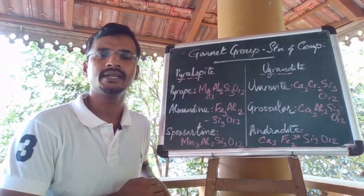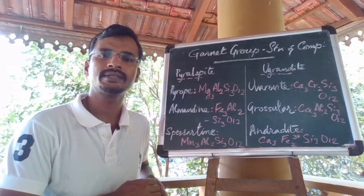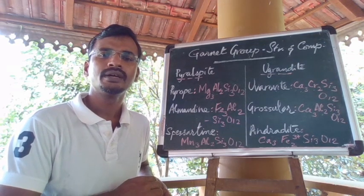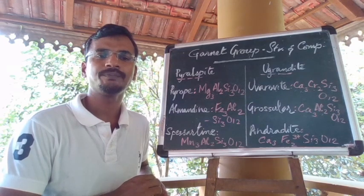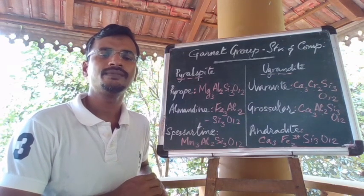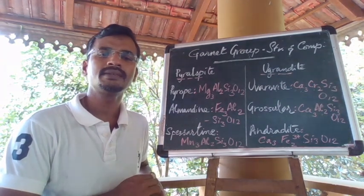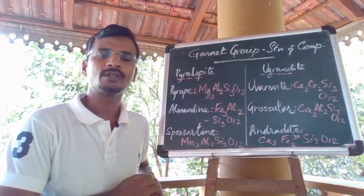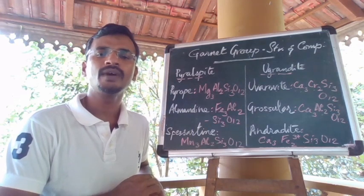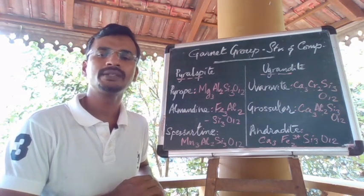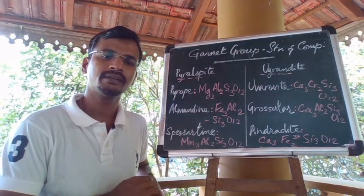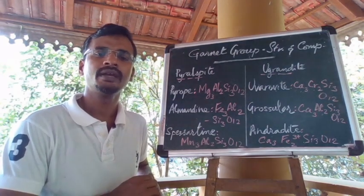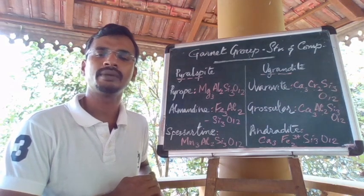Melanite is a titanium variety of andradite (Ca3Fe2Si3O12) where the octahedral position is occupied by iron. When Fe3+ is greater than Ti in the octahedral site the garnet is called melanite. If Fe3+ is less than Ti in its octahedral site, such garnets are called schorlomite. So, a higher proportion of iron compared to titanium gives melanite, while a lower proportion gives schorlomite.